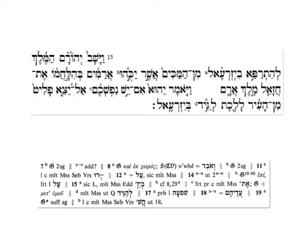2 Kings 9.15. There are four different places in the text where the BHS editor is offering some kind of comment. These are marked by placing the lowercase letters of the English alphabet directly after the terms being commented on. And then in the lower portion of the page, in the apparatus, those same letters correspond to a series of notes where the editor is making various suggestions that need to be considered relative to the text.